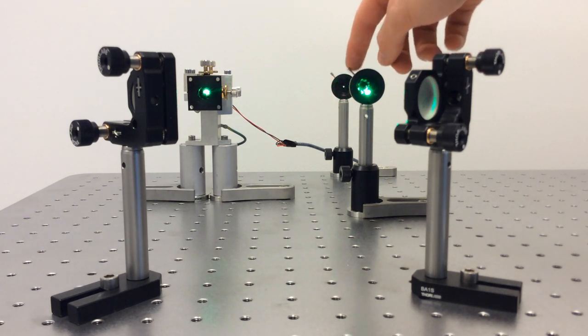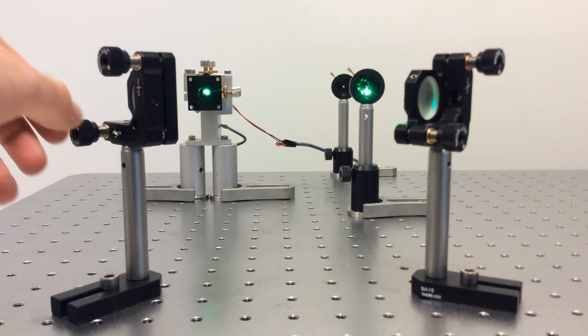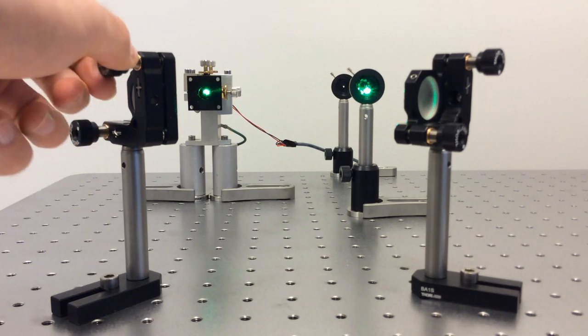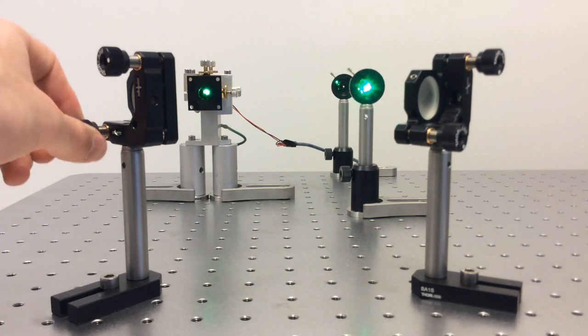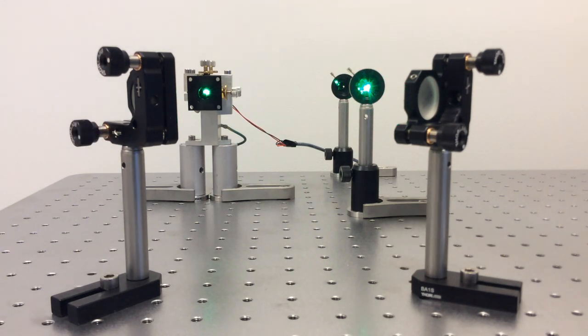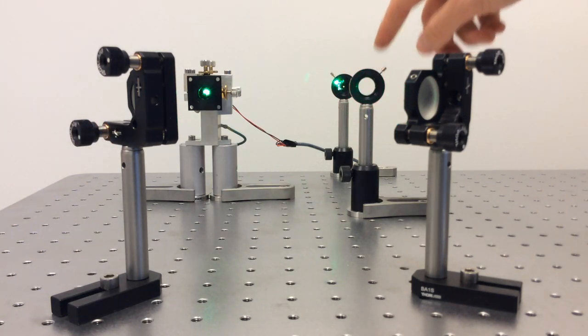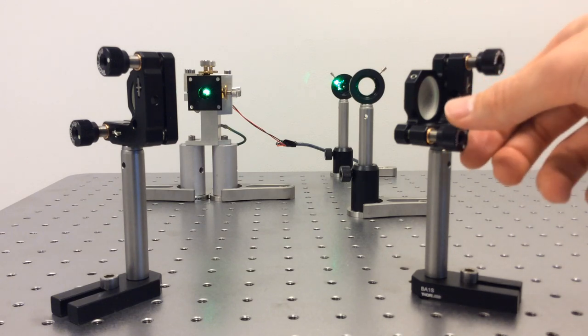I narrow down the iris and use my first mirror to adjust the beam so that it goes through the center. Then I open that iris again and use the second mirror to adjust the beam position on the second pinhole.